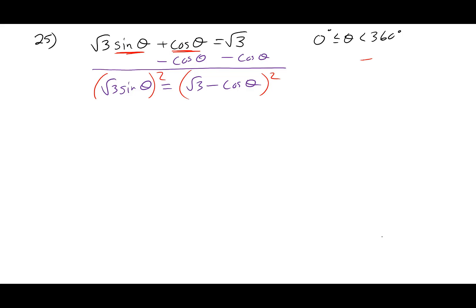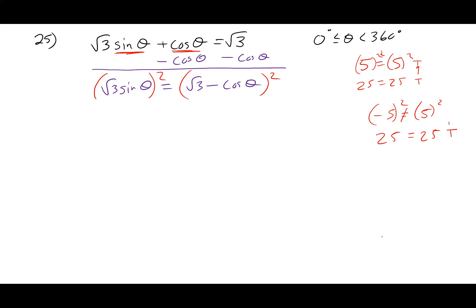Something we talked about the other day: when you square numbers, if things are already equal and you square them, they still turn out to be equal. So a true statement goes back to a previous true statement, but there's also another problem. When you square a negative, it turns positive — negative five is not equal to five, but when you square both of them, they turn out to be a true statement when originally it was a false statement. So what do we do? We just check our answers as we do it.